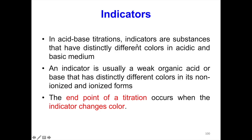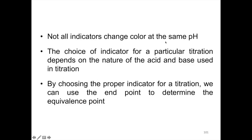Indicators. In acid-base situations, indicators are substances that have distinctly different colors in acidic and basic medium. An indicator is usually a weak organic acid or base that has distinctly different colors in its non-ionized and ionized forms. The end point of a titration occurs when the indicator changes color. But not all indicators change color at the same pH, so the choice of indicator depends on the nature of the acid and base used. By choosing the proper indicator, we can use the end point to determine the equivalence point.